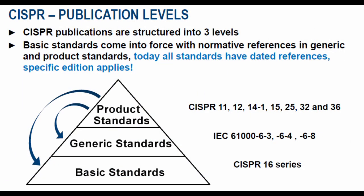CISPR standards are published at three levels. The first is a basic standard, the second is a generic standard, and the third is a product standard. In the basic standards, they define the measurement apparatus, measurement methods, measurement uncertainty, and test facilities.